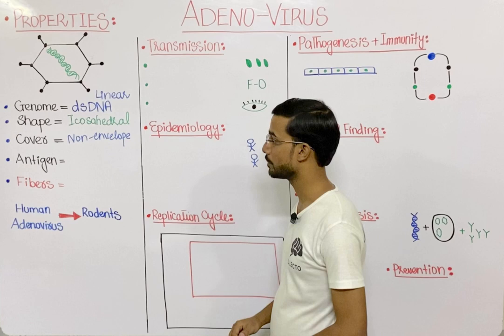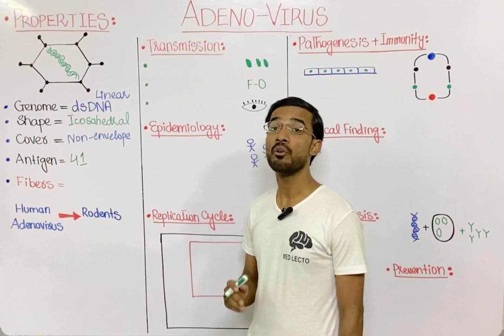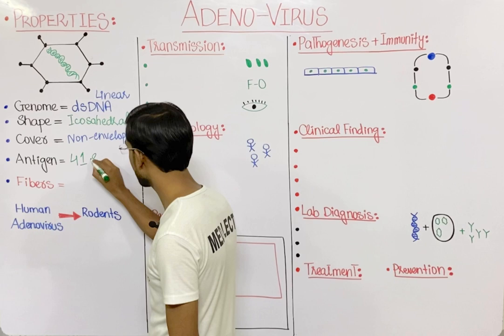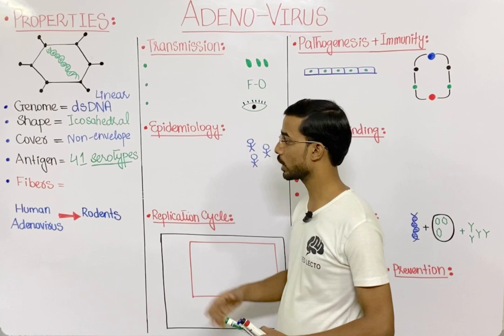The fourth property is the antigen. You will see 41 different antigens, meaning 41 different serotypes of the adenovirus. The serotypes are determined on the basis of variations in the antigens.